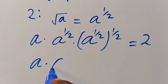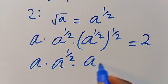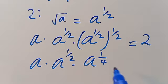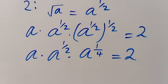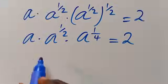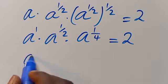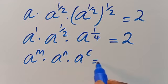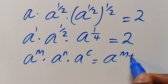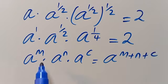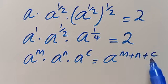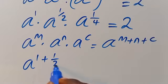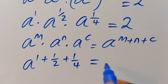So from here we have A multiplied by A to the power of 1 divided by 2, multiplied by A to the power of 1 divided by 2 times 1 divided by 2, which is 1 divided by 4, equals 2. Recall that A to the power of M, multiplied by A to the power of N, multiplied by A to the power of C, equals A to the power of M plus N plus C, so far they have the same base. Applying it here, we have A to the power of 1 plus 1 divided by 2 plus 1 divided by 4, equals 2.